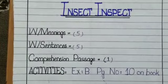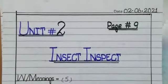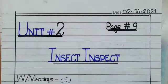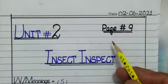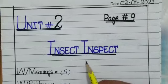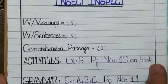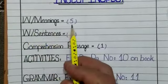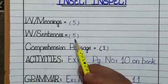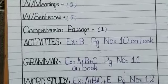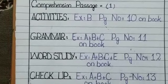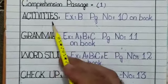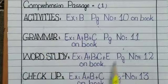Come to the next sheet. In this sheet you will find the title page for Unit Number 2. You will make this kind of page in your copy. First of all you have to write the date, then unit number, page number, and the title name of the unit. After date I have written words meaning — we have five words meanings. Next we have word sentences, we have a total of five word sentences in this unit. After that the next topic will be comprehension passage, and then the further work you will do with the activities written with capital letters.